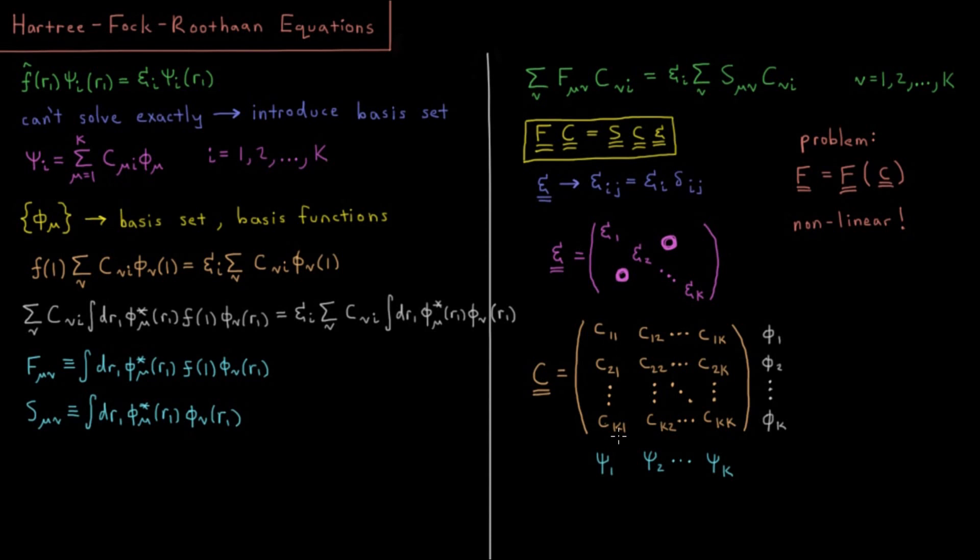C1,1 up to Ck,1 are all the coefficients of psi 1. C1,2 up to Ck,2 are all the coefficients of psi 2, all the way up to psi k. Each row here is the coefficient of what each of those spatial orbitals is for basis function phi 1.